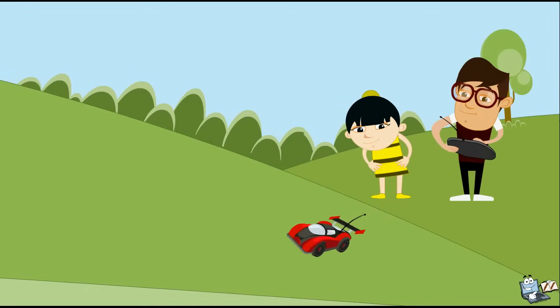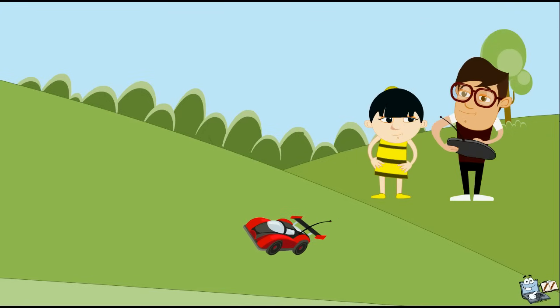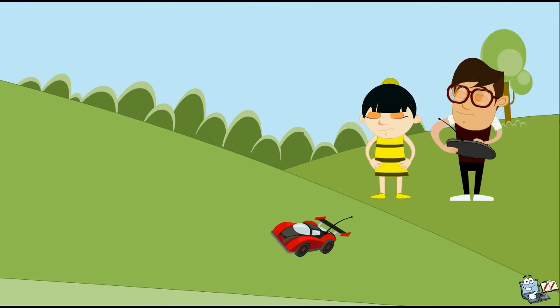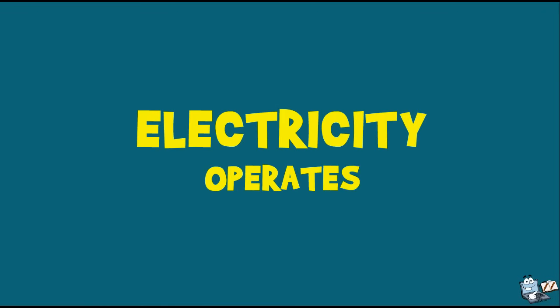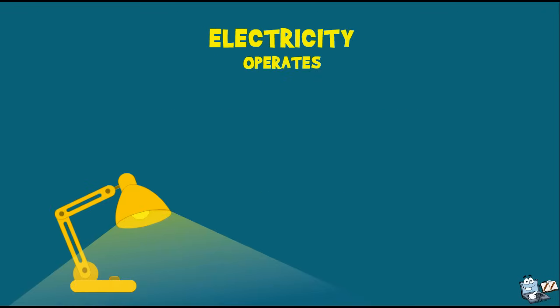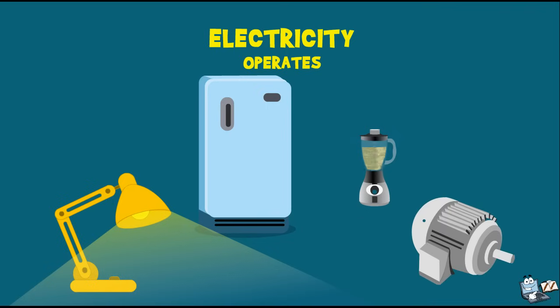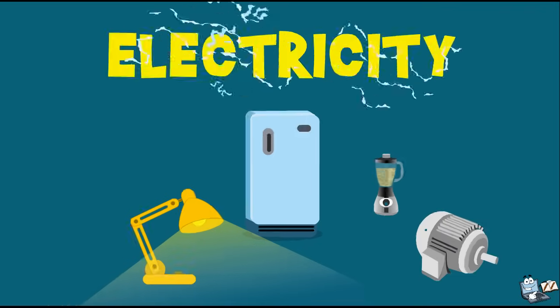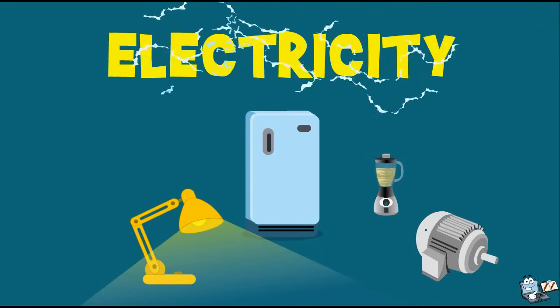Its uses range from small batteries that operate your remote control car to huge motors that power ships and trains. Electricity operates our lights, runs our refrigerators, kitchen appliances, and powers motors. So electricity is very much important to all of us.